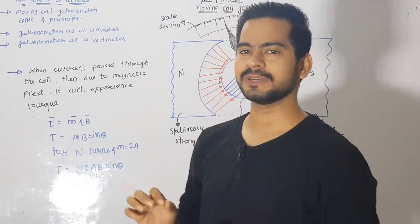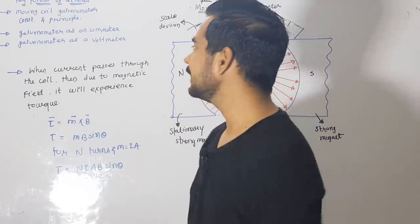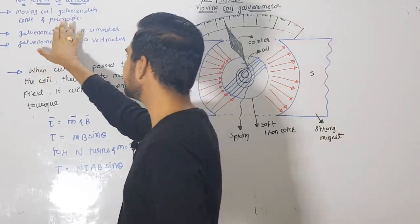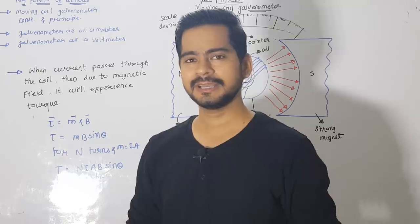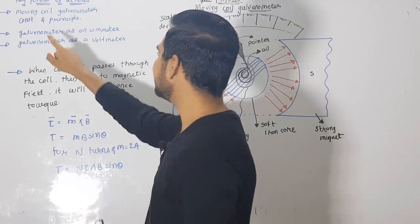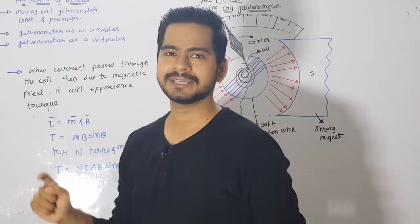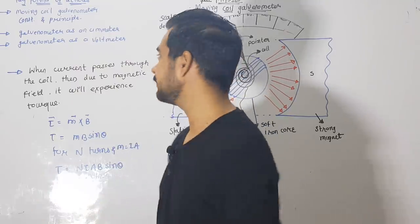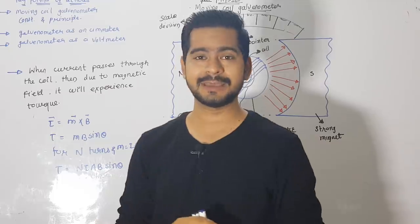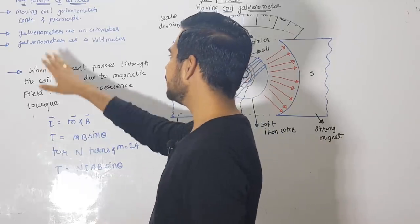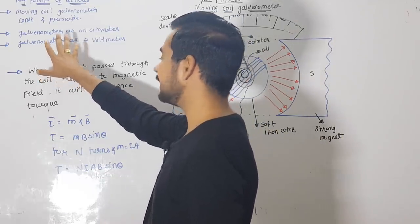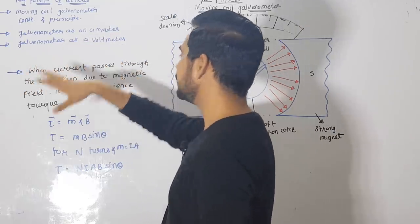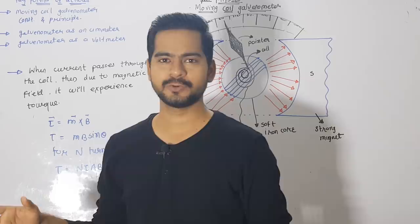It is your last topic from the chapter 'Moving Charge and Magnetism.' The main key points of this lecture will be the construction and principle of the moving coil galvanometer, then we will deal with the galvanometer as an ammeter — a device that can measure current — and also we will see its problems and solutions. The second point will be the difficulties and solutions when taking the galvanometer as a voltage measuring device, which is called a voltmeter.